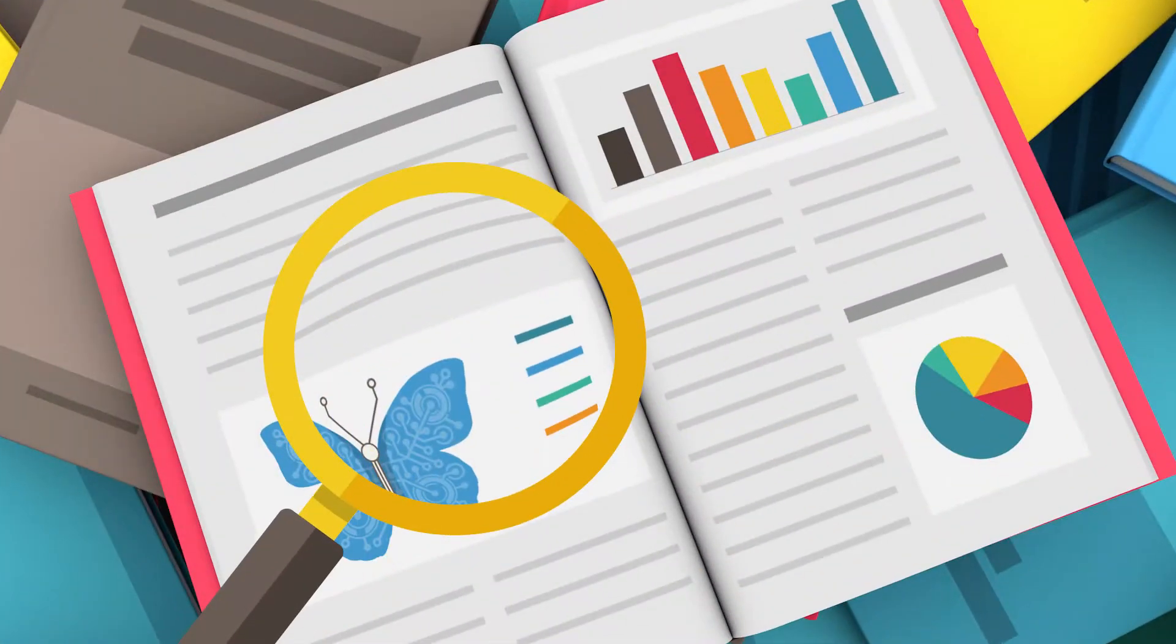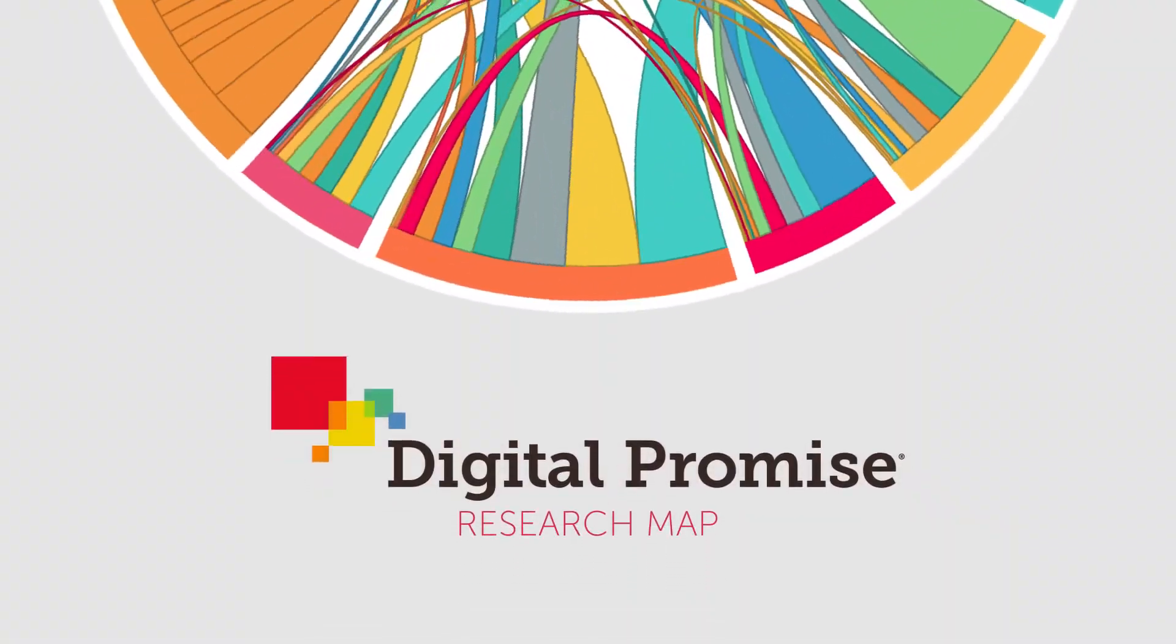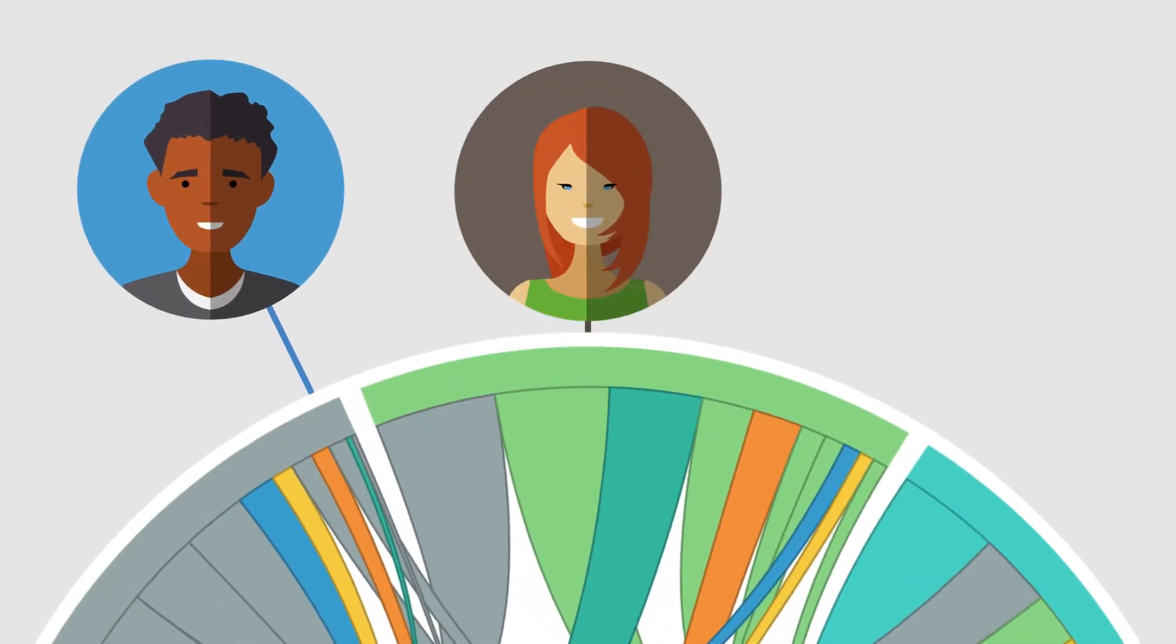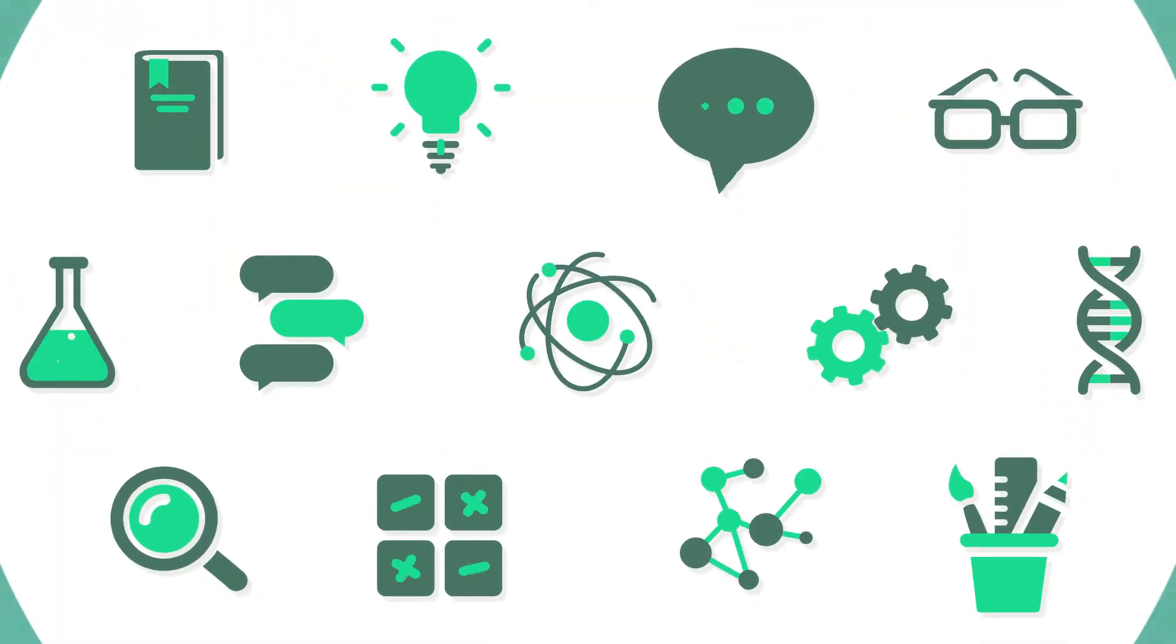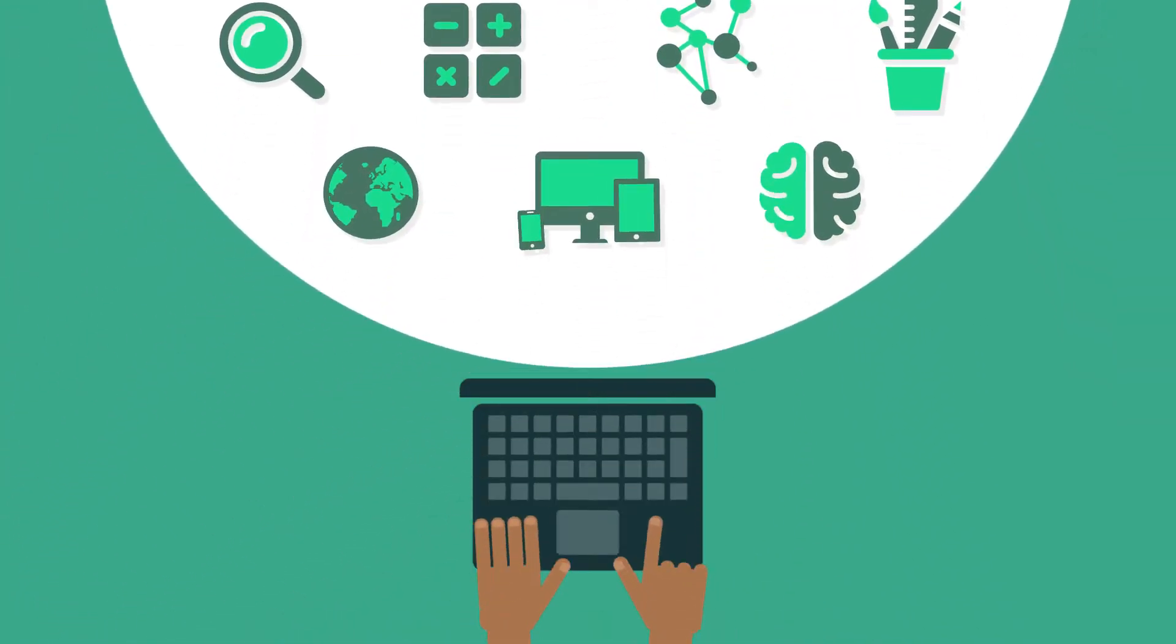Looking for high-quality education research? The Digital Promise Research Map helps education leaders, policy makers, and technology developers quickly access education and learning science research findings that can inform their work.